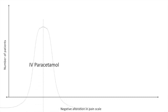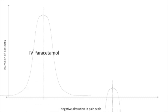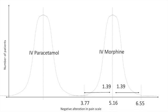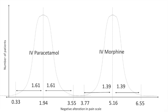On the graph we have number of patients and reduction in pain scale. A decreased score means the pain got better; an increased score means the pain got worse. There are no negative examples given, so we focus on the positive axis. We have our IV paracetamol group and our IV morphine group. For IV morphine the mean is 5.16, and with plus-minus 1.39 the upper limit is 6.55 and lower limit is 3.77. Likewise for IV paracetamol. That gap between the two groups, with a p-value of less than 0.01, means there is a significant difference — morphine is better able to treat pain than IV paracetamol.